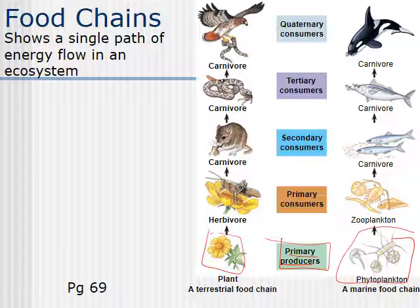After your producers come your consumers. Consumers are creatures that eat other organisms. The next level is the primary consumer. Here they show a grasshopper eating a flower. After that is still a consumer, but now it's a secondary consumer. Then you have a tertiary consumer — that's a third-level consumer. And then a quaternary, or fourth-level, consumer. So you always start with primary producers, followed by primary consumers, then secondary consumers, then tertiary consumers, and quaternary consumers.